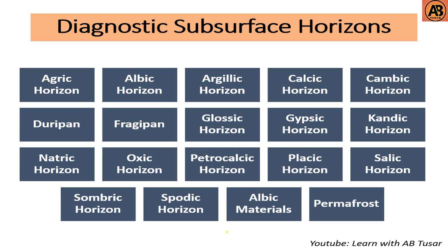Now we are going to learn about the subsurface diagnostic horizons. The diagnostic subsurface horizons are: agric horizon, albic horizon, argillic horizon, calcic horizon, cambic horizon, duripan, fragipan, glossic horizon, gypsic horizon, kandic horizon, natric horizon, oxic horizon, petrocalcic horizon, placic horizon, salic horizon, sombric horizon, spodic horizon, albic materials, and permafrost. We are going to learn about these subsurface horizons briefly.